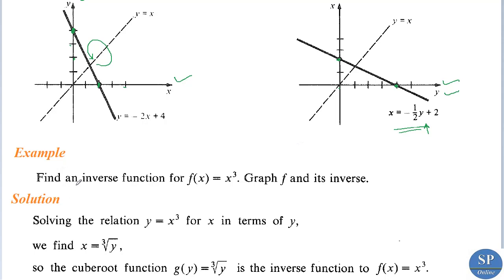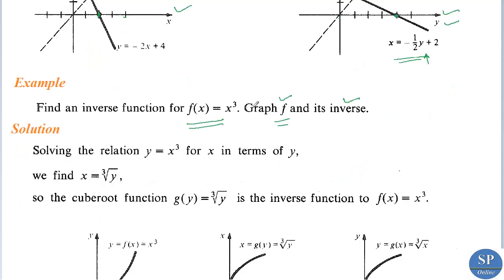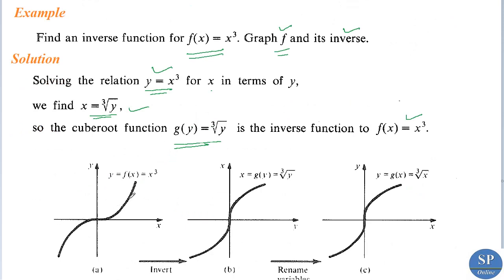Next, we discuss another example: find an inverse function for f of x equal to x cubed, and also graph f and its inverse. We have the function y equal to x cubed. Solving this equation for x in terms of y, we get x equal to the cube root of y. So the cube root function g of y equal to cube root of y is the inverse of f of x equal to x cubed. The graph of y equal to x cubed is this well-known curve.